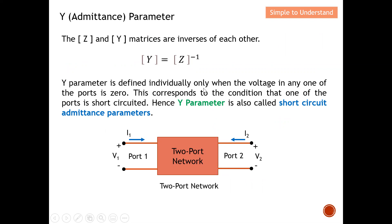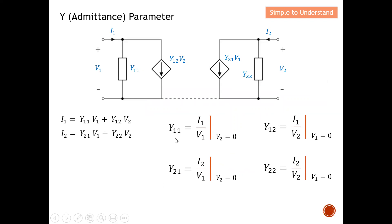Y parameters are defined individually only when the voltage at one of the ports is zero, meaning one port is short-circuited. Therefore, you can short-circuit V2 or short-circuit V1 as needed. For this reason, Y parameters are also called short-circuit admittance parameters.